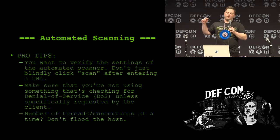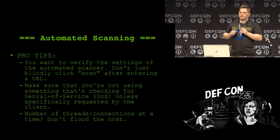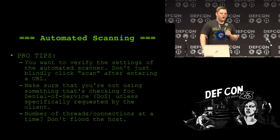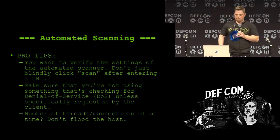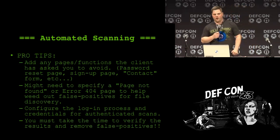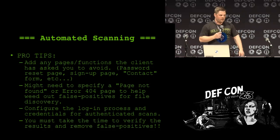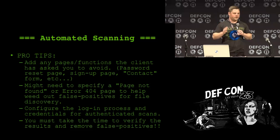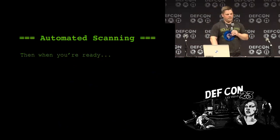Automated scanning pro tips: verify the settings of the automated scanner — don't just put in the URL and click go. Look at the settings and make sure you're not going to cause a denial of service. If you need to throttle back and change the number of threads, do that. You can add pages or functions to avoid. A common web app issue: a client will say, this is our contact page — if you scan it, we'll get thousands of emails from your automated scanner. So ask what pages to stay away from. Once you've verified the settings and everything is set up, start the scan.